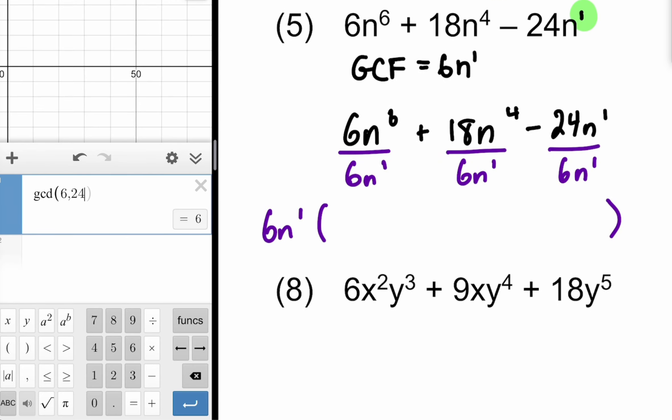So we go by the numbers first. 6 divided by 6 is 1. Then we take care of the variables. Keep the base, subtract the exponents. So N to the fifth. Plus 18 divided by 6 is 3. Then we take care of the variables. Keep the base, subtract the exponents. N to the third. Minus 24 divided by 6, 4. Keep the base, subtract the exponents. N to the zeroth. N to the zeroth is 1. No change there. So we disregard. And so our 6N multiplied by that trinomial would be the factored form of the 6N to the sixth plus 18N to the fourth minus 24N to the first.